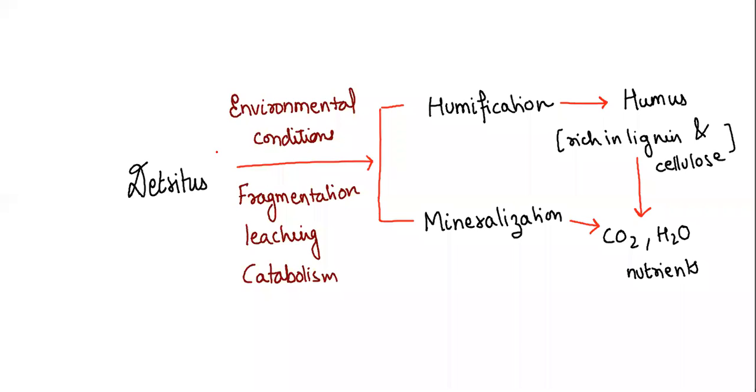These are the five stages. Let's sum up with the help of flow diagram. As you can see on the screen, detritus under environmental condition will go in these three stages like fragmentation, leaching and catabolism. These three stages will lead to humification or mineralization.